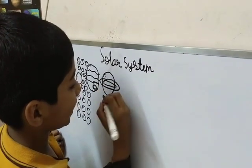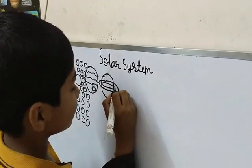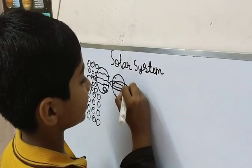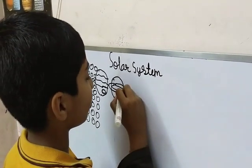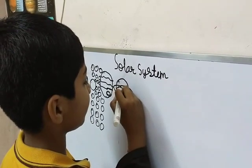This is Saturn. The Saturn rings have rock and satellite rings.